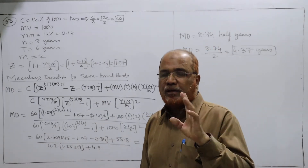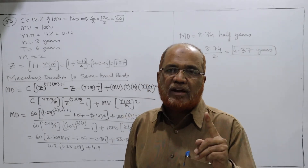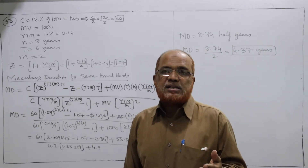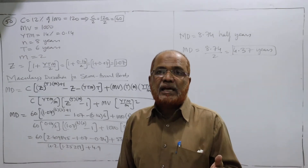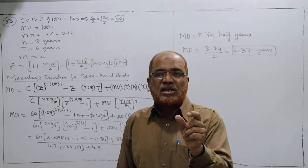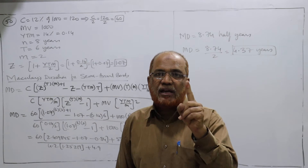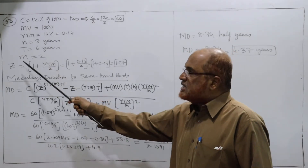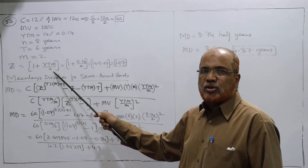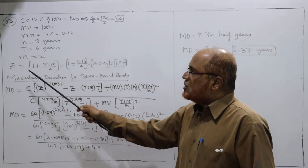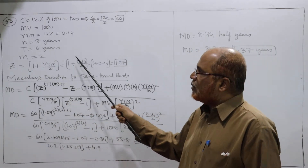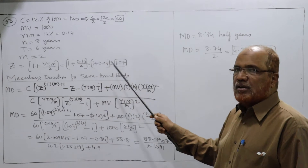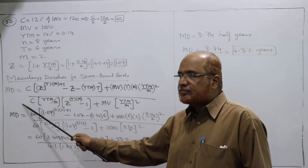M stands for how many compounding periods per year — how many times interest is paid in one year. For a semi-annual bond, M equals two. If quarterly, M equals four; if monthly, M equals twelve. In our problem, semi-annual, so M equals two. Z equals one plus YTM divided by two. YTM is 0.14, so 0.14 divided by 2 is 0.07, giving Z equals 1.07.